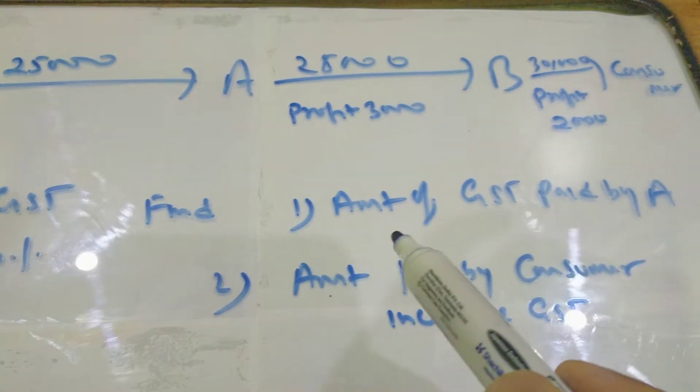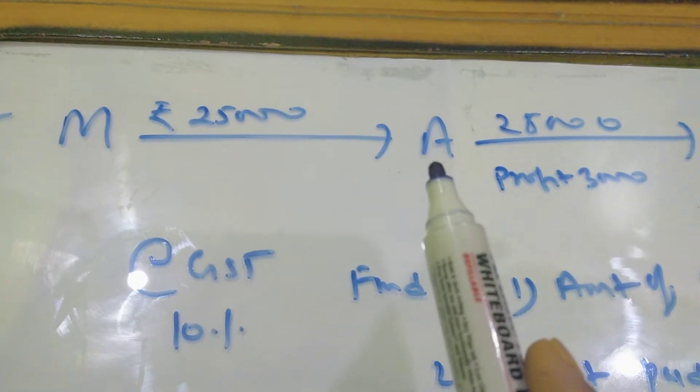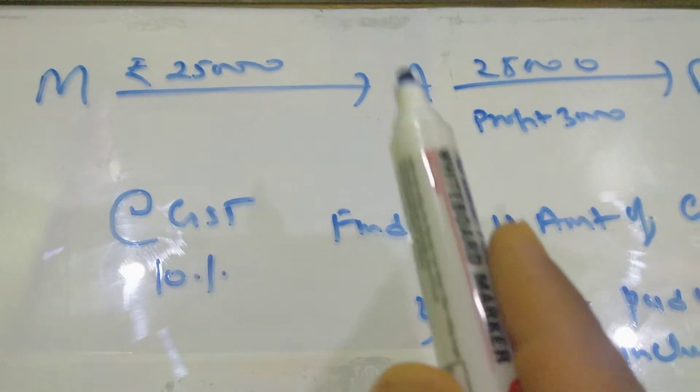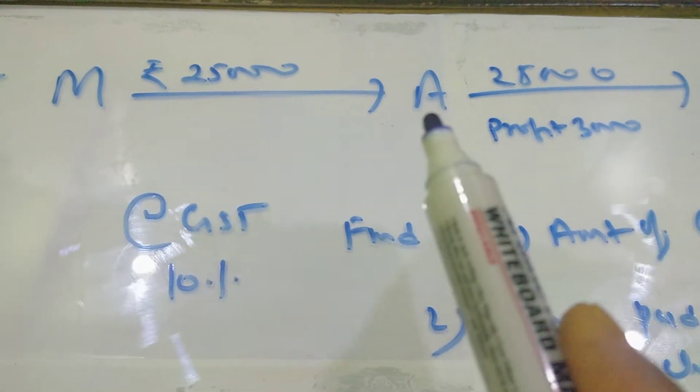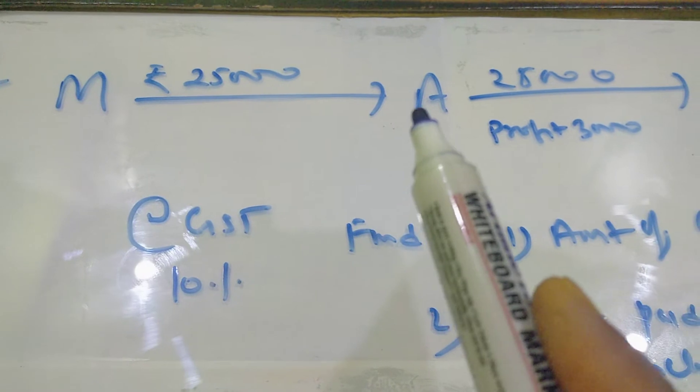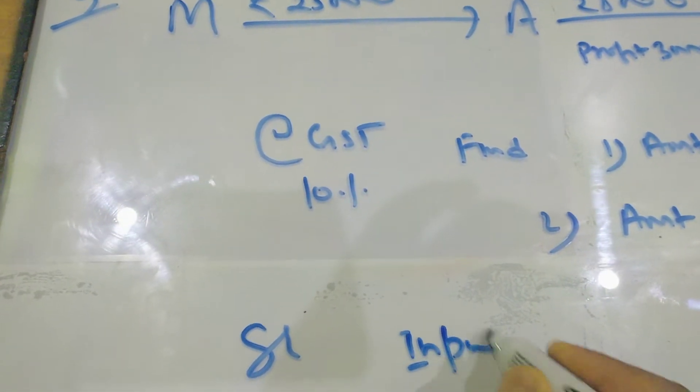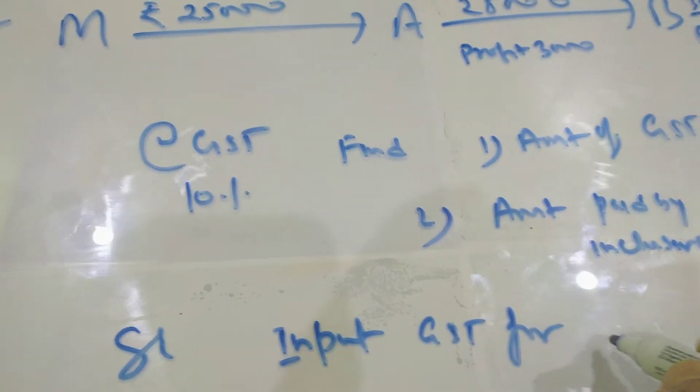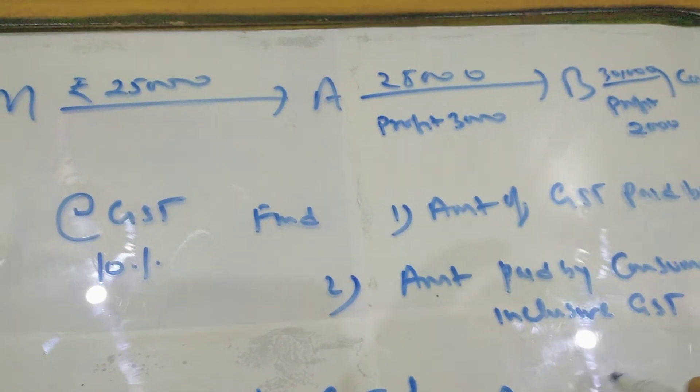Now look at the question. We have to find the amount of GST paid by A. Now look here, A is not a consumer. Basically, he is a businessman. So he has to face two steps: one is input and another is called output. When he is purchasing, when he is selling the article, then it is called output tax.